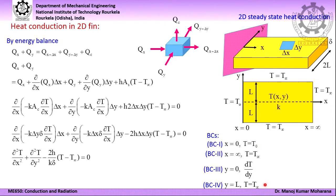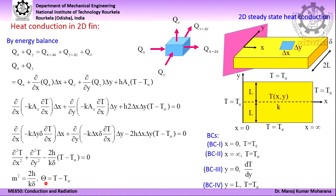For solving the problem, we require at least 3 boundary conditions to be homogeneous along with the governing differential equation. That means we need to convert this non-homogeneous governing differential equation and boundary conditions into homogeneous form. For this, we use a simple transformation: theta equals T minus T infinity. Please remember, here theta is not dimensionless — it is in dimensional form only. This transformation will help us convert these non-homogeneous equations into homogeneous form.